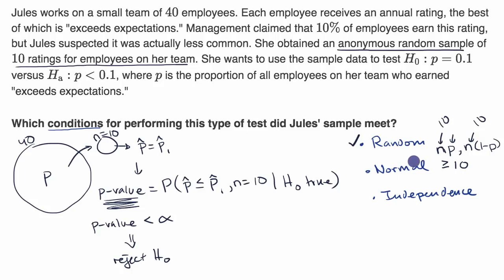And our true proportion, remember, we're going to assume when we do the significance test, we assume the null hypothesis is true. And the null hypothesis tells us that our true proportion is 0.1. So this is 0.1. This is one minus 0.1, which is 0.9. Well, 10 times 0.1 is one, so that's not greater than or equal to 10. So just off of that, we don't meet the normal condition.